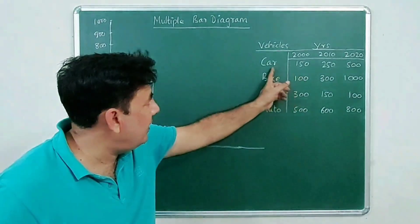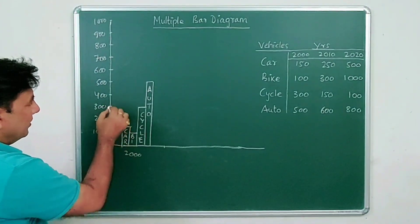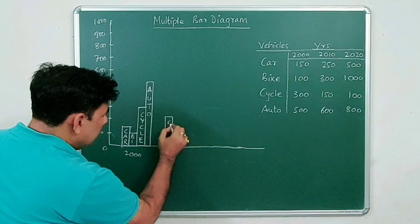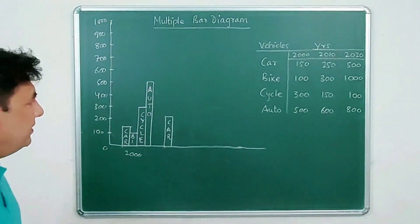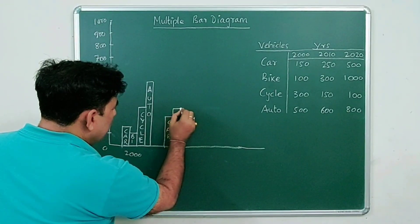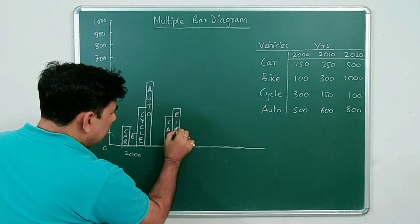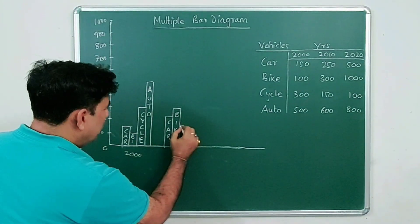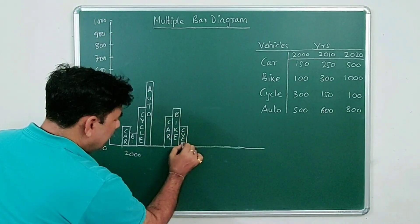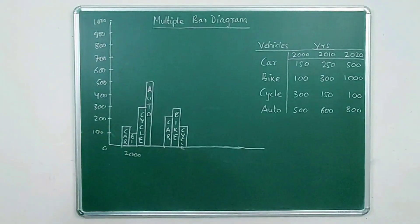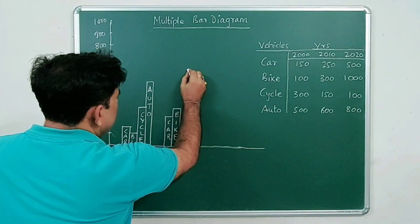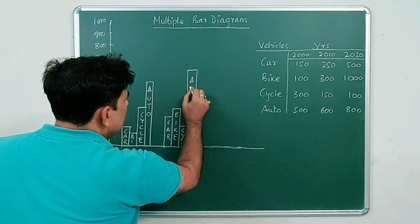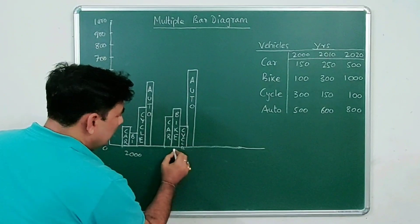For 2010, start from the next group with equal gaps. In 2010, cars were 250 — that's between 200 and 300. Bike is 300, so draw it here. Cycle is 150, so draw it between 100 and 200. Autos were 600, so draw that bar up to 600. This is the group for 2010.